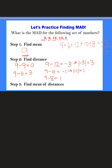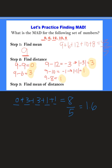So once we've found all the distances — 0, 3, 3, 1, and 1 — we are going to take those distances and find the mean of them. We add all those highlighted numbers together and divide by how many are in the set. So 0 plus 3 plus 3 plus 1 plus 1: that's 8. And we divide by 5. So 8 divided by 5 would give us 1.6. So 1.6 is the MAD of the data set.